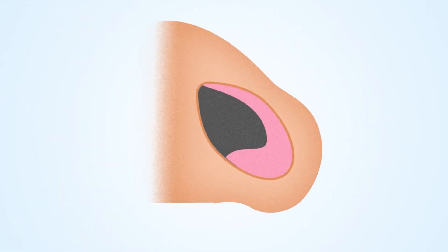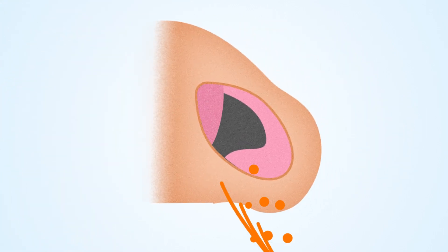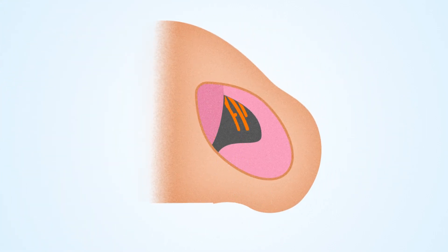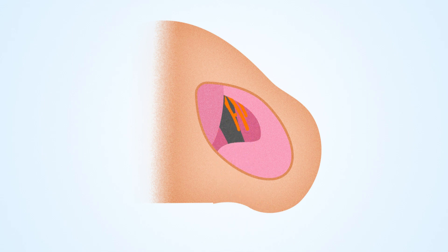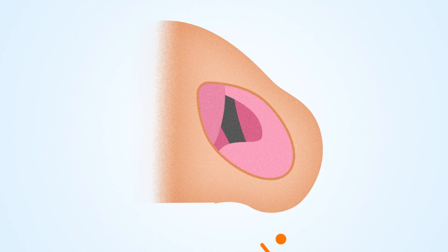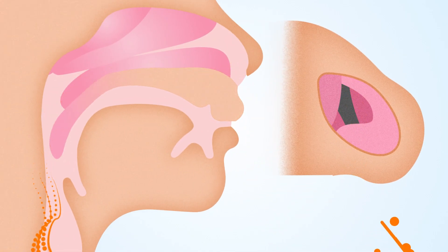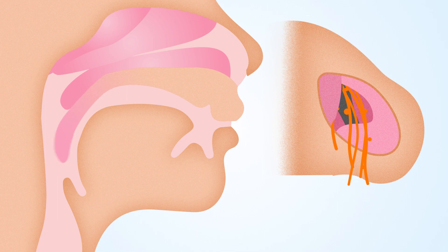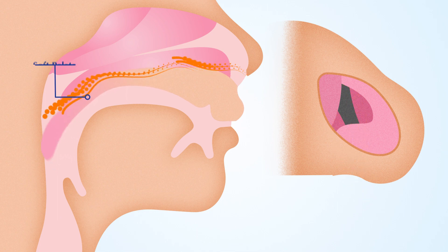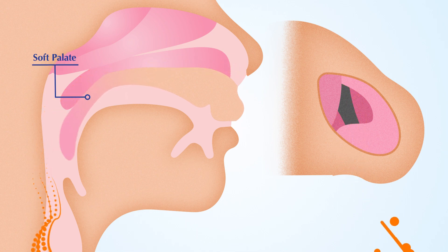Obstruction of the nasal airway, such as a deviated septum, allergic swelling of the turbinates, or a chronic sinus inflammation, can create rapid and turbulent airflow. This rapid airflow creates a suction current, vibrating and stretching the soft palate and uvula.